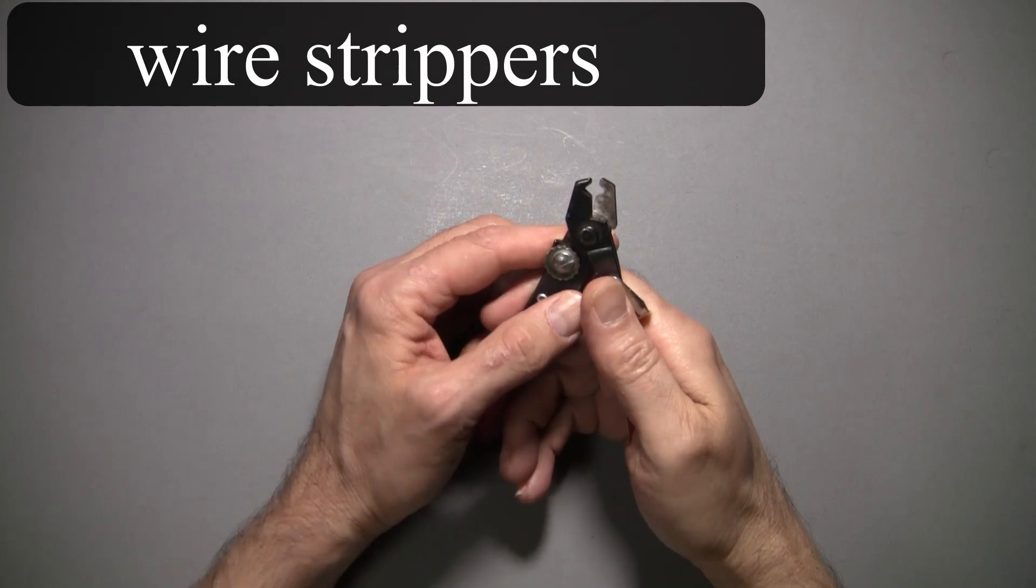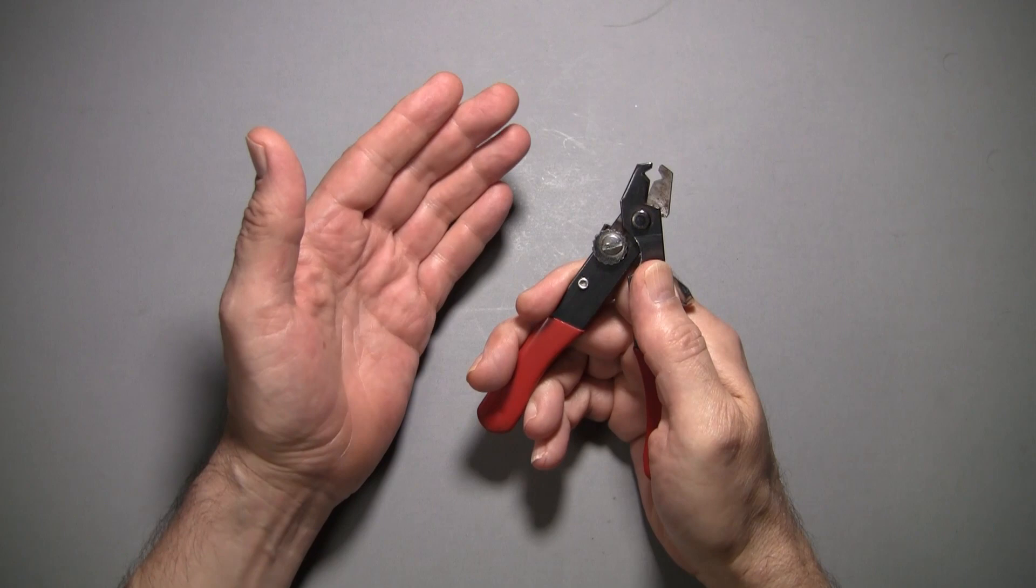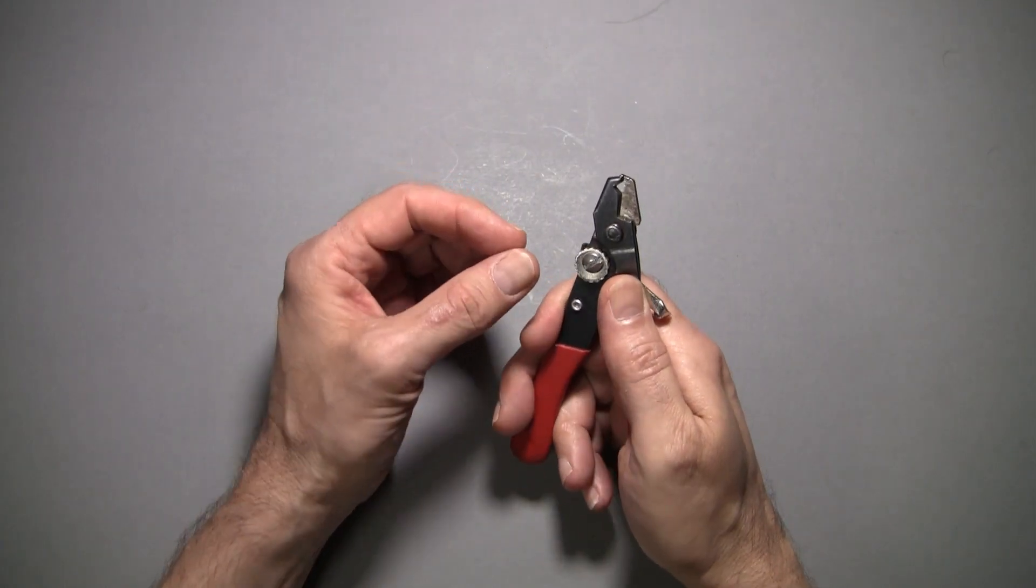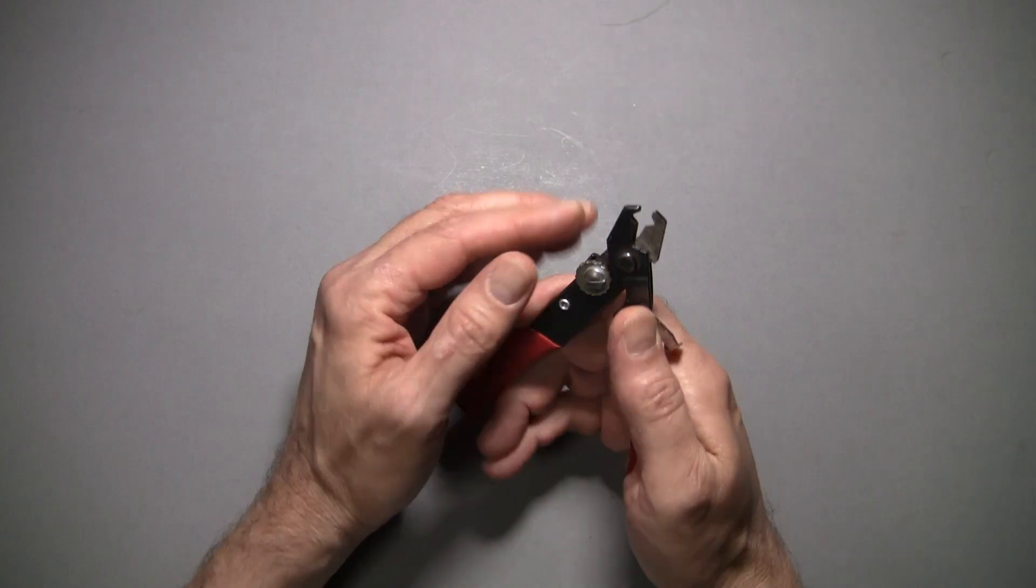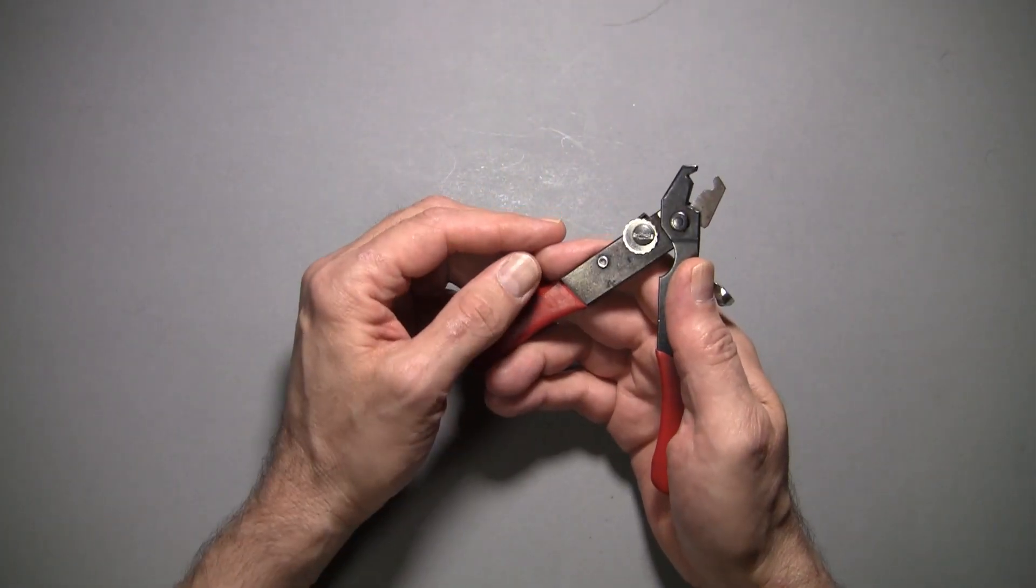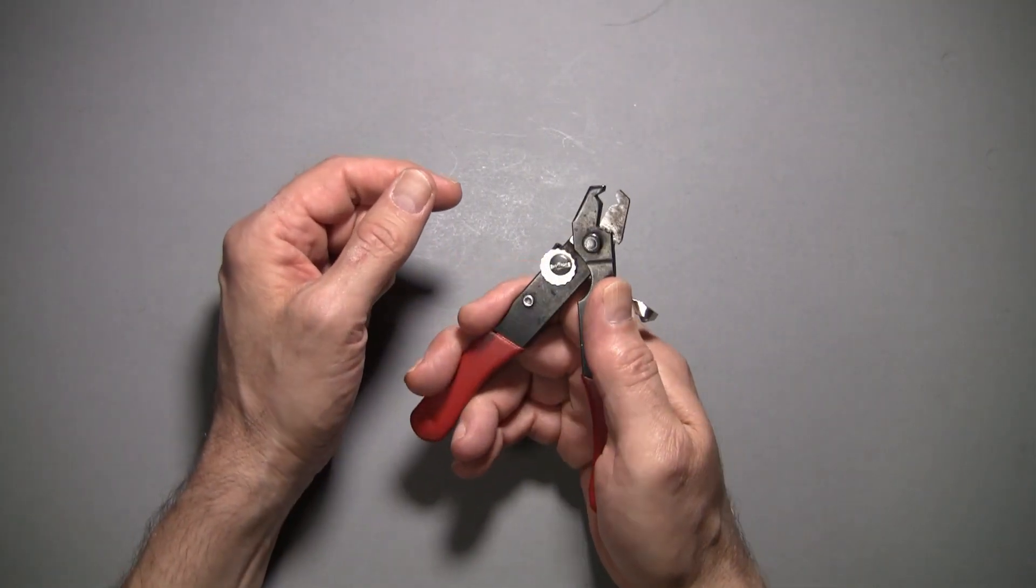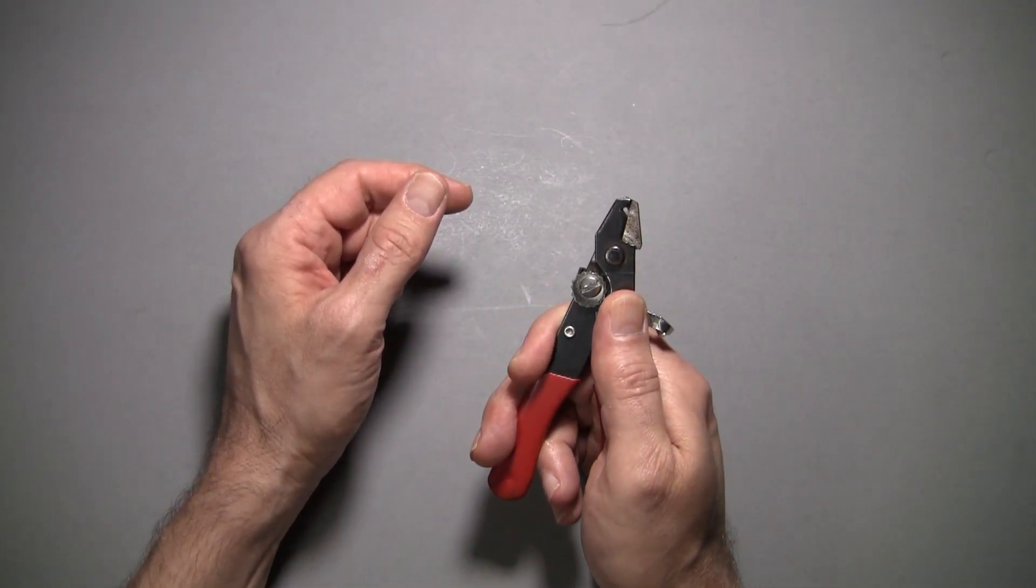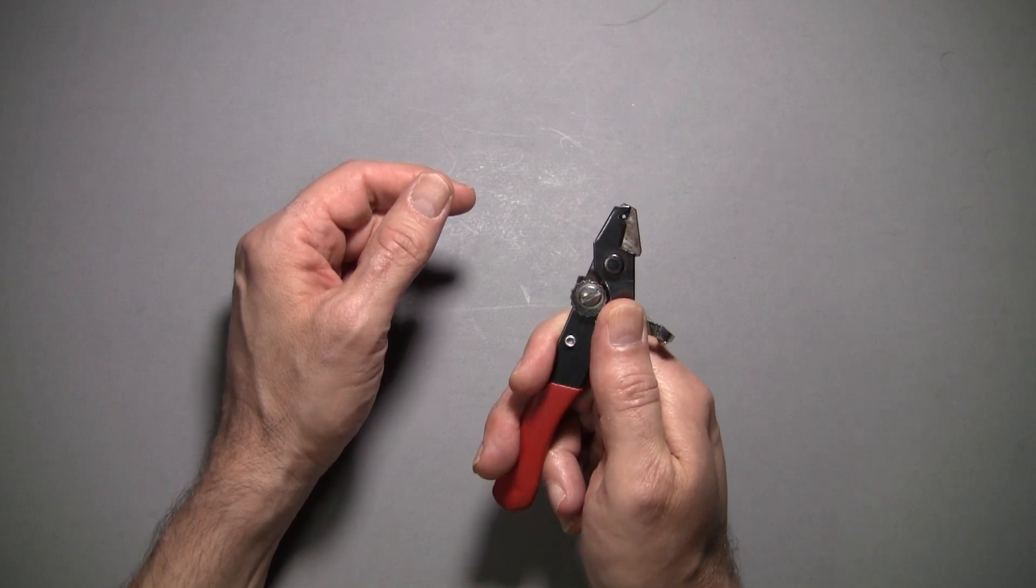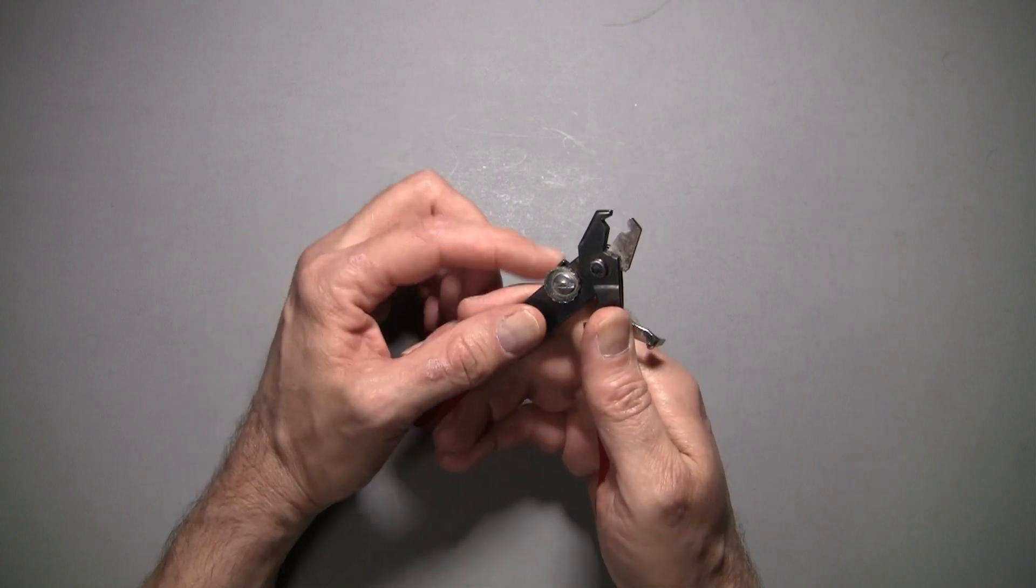Wire strippers. I like these wire strippers that are sort of continuously adjustable. I've developed a feel for them so I can strip pretty much any size wire. They do require that you develop a little bit of a feel. If you'll notice I have two fingers on the outside and two fingers on the inside, and that's so I can very carefully adjust them as I'm cutting through the insulation and not cut through the wire. So they can be a little tricky to use when you're starting out.